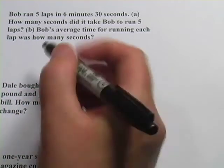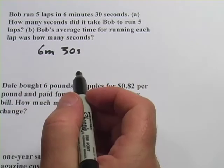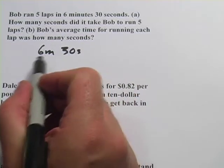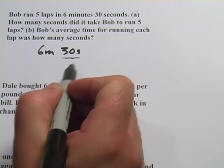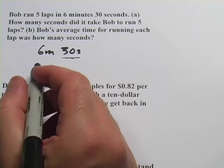So we simply have to convert this six minutes 30 seconds into just seconds. I'm going to leave the 30 seconds alone and just convert the minutes. I know that there are 60 seconds in a minute.